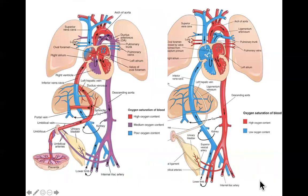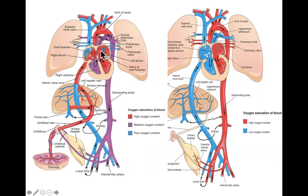That just leaves us with discussing fetal circulation versus neonatal circulation, which as you can see from the diagram is very different. On this diagram, highly oxygenated blood is colored red, areas of poor oxygenation are colored blue, and semi-oxygenated blood is colored purple. One thing to note: the left side of the heart should probably also be colored purple, because it has partially oxygen-poor blood coming into it from where it mixes with highly oxygenated blood in the left atrium.